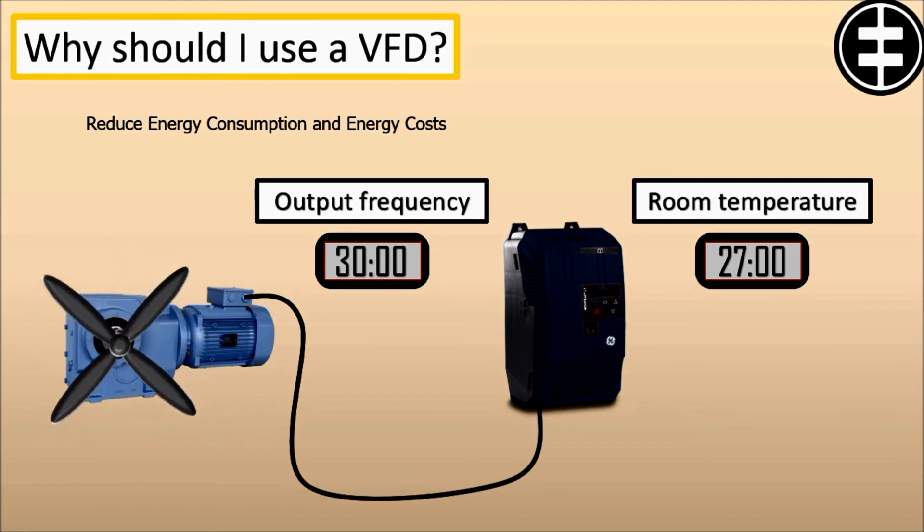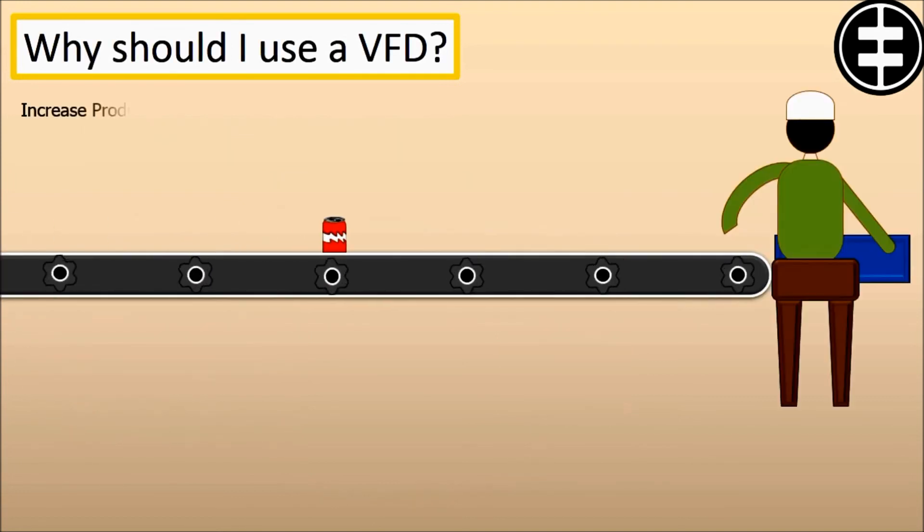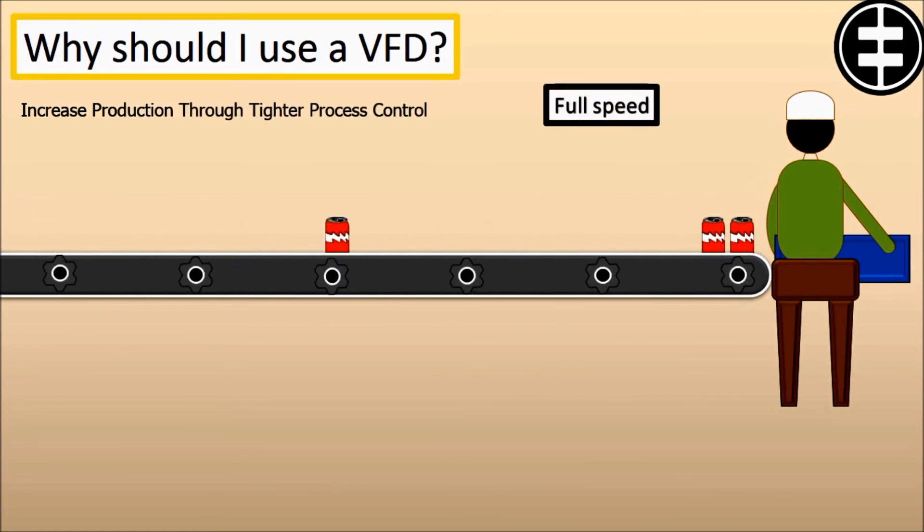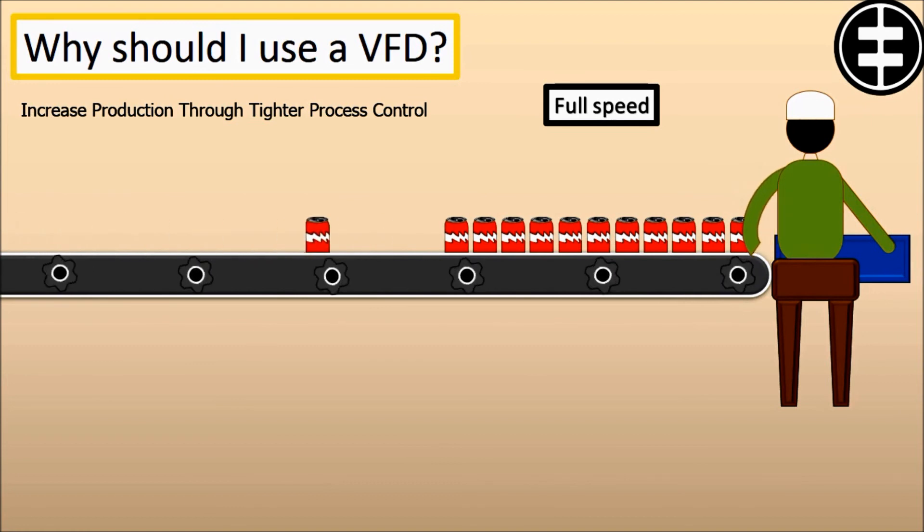Additionally, the utilization of VFDs improves product quality and reduces production costs. Combining energy efficiency tax incentives and utility rebates, returns on investment for VFD installations can be as little as 6 months. Increase production through tighter process control by operating your motors at the most efficient speed for your application. Fewer mistakes will occur, and thus, production levels will increase, which earns your company higher revenues.